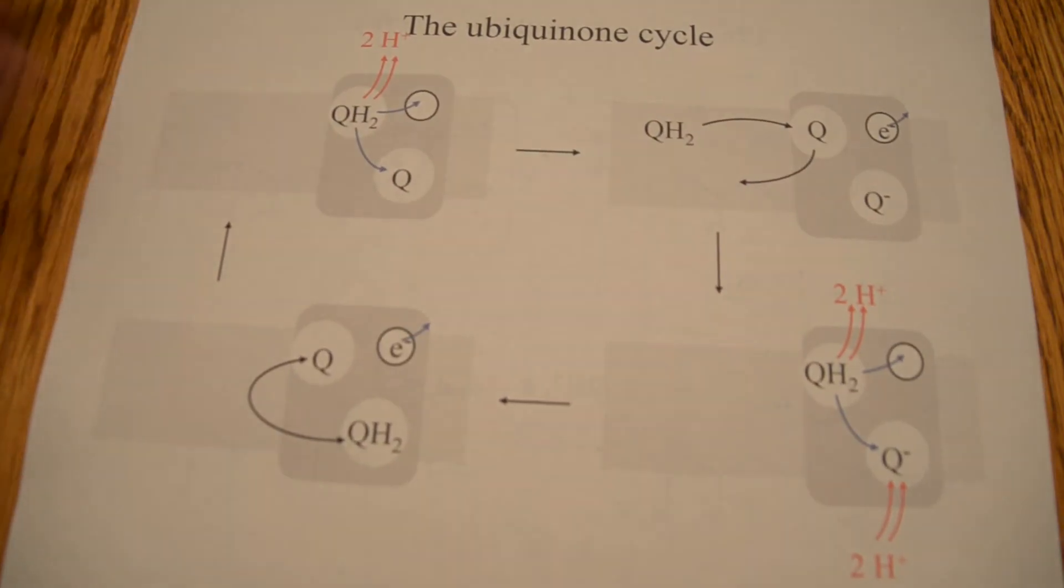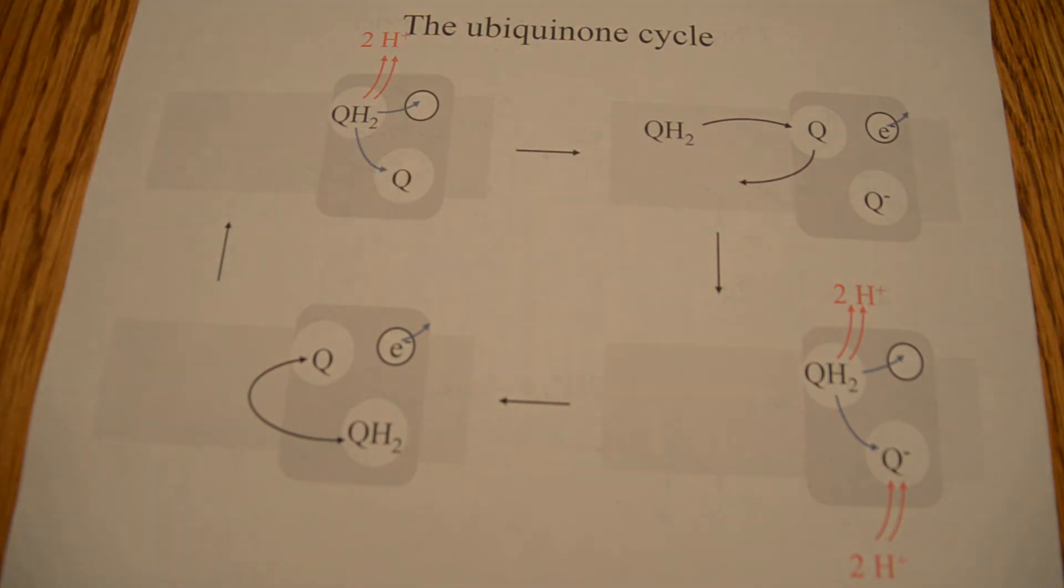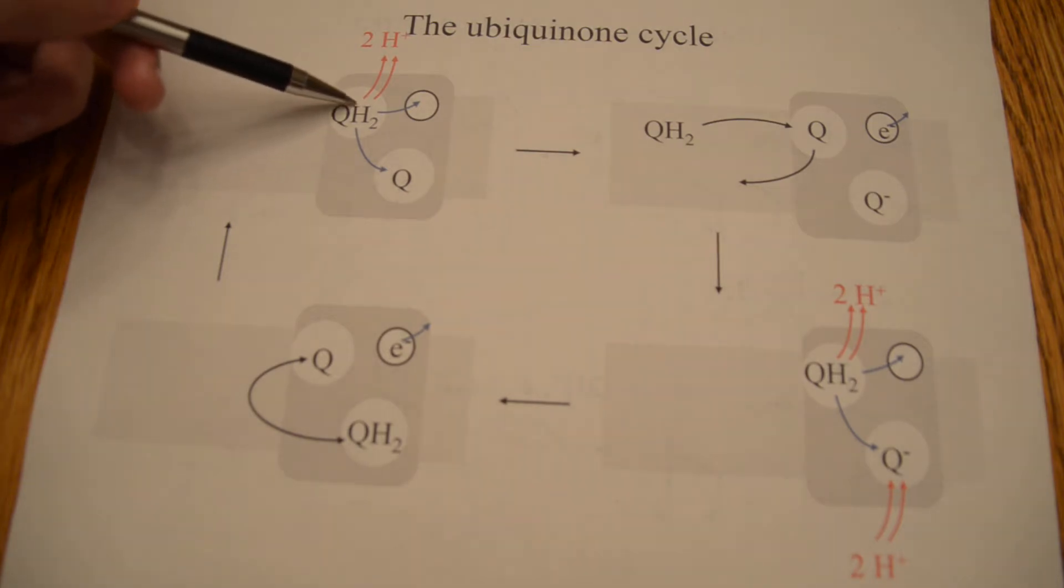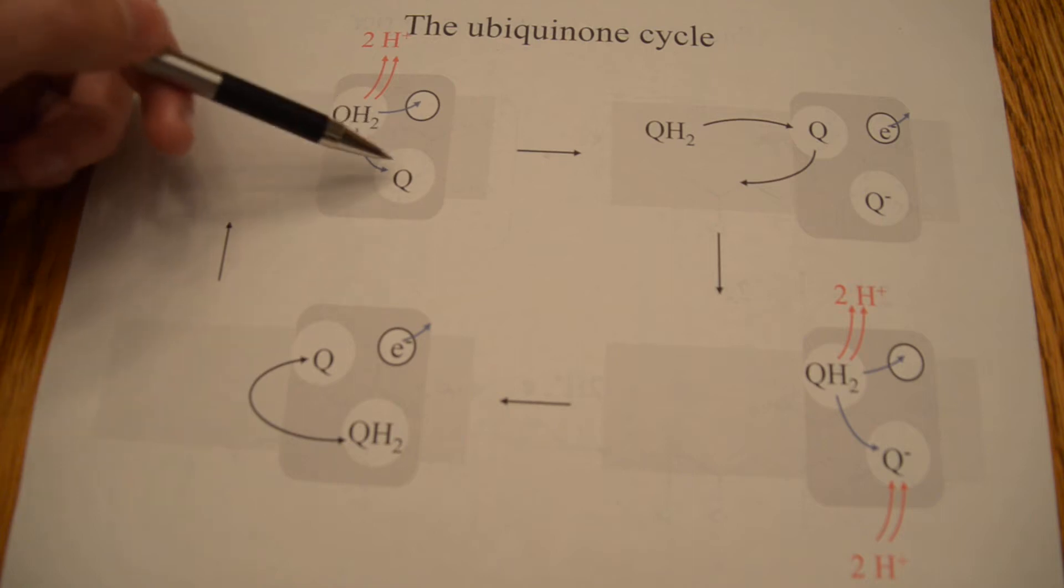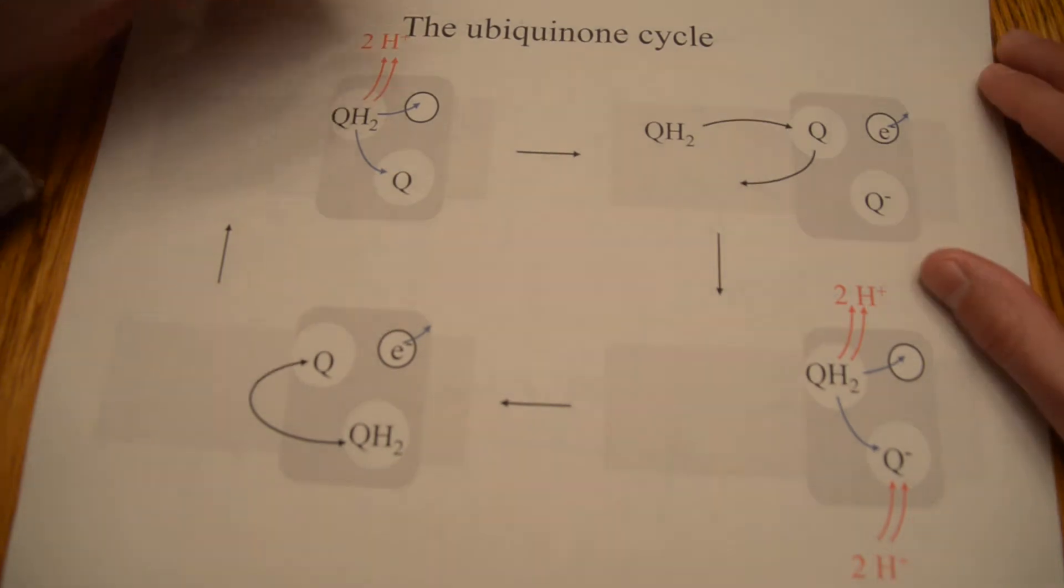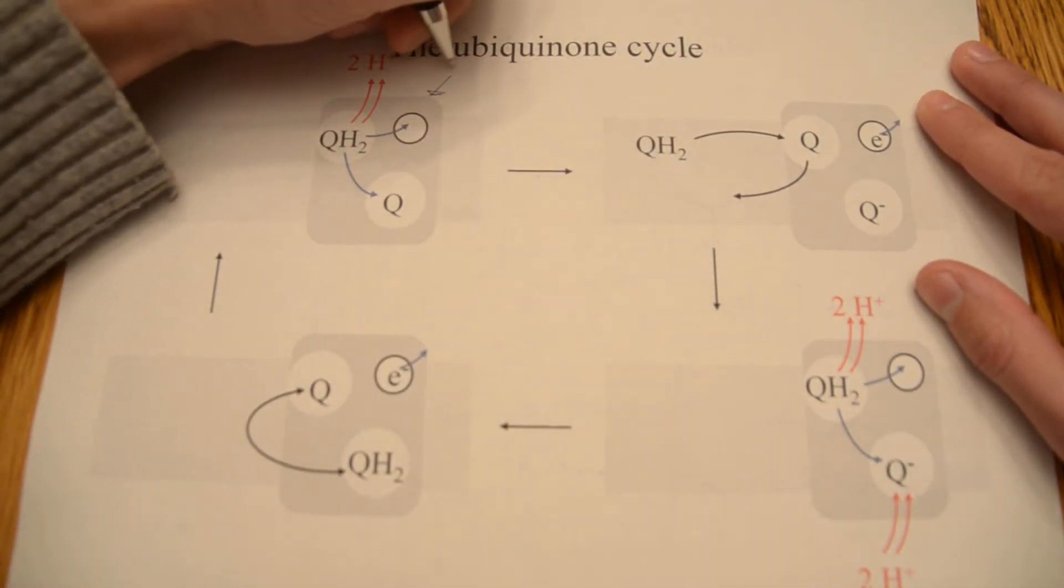So here, this is just a little simplified diagram of complex 3. Obviously there's much more complicated things going on here than just a couple active sites, but for our purposes, this will give us a view as to how the ubiquinone that is reduced will become re-oxidized, and then it can complete the cycle. So this is complex 3 right here, this gray cube type thing.